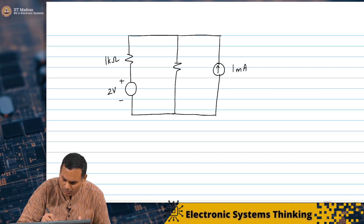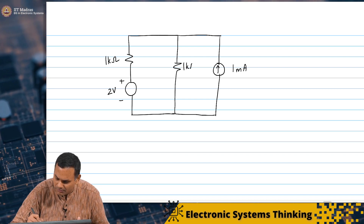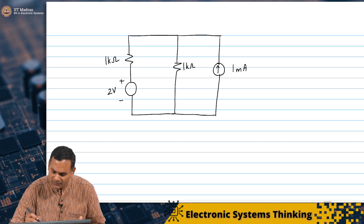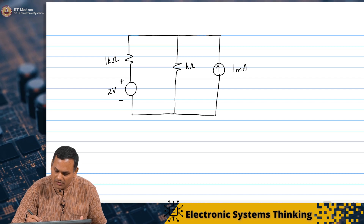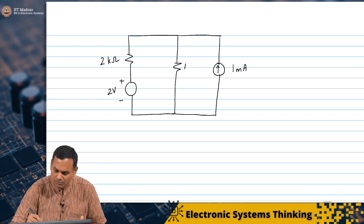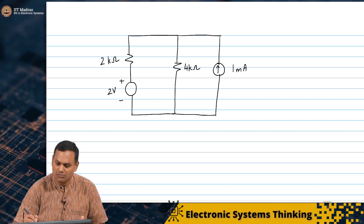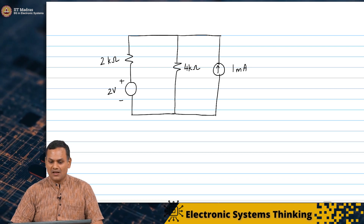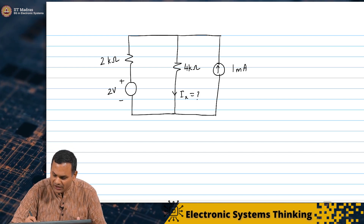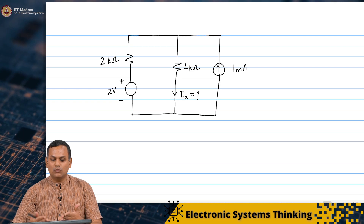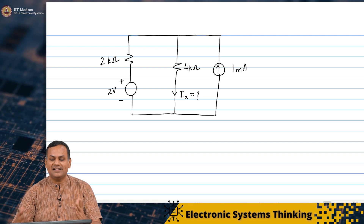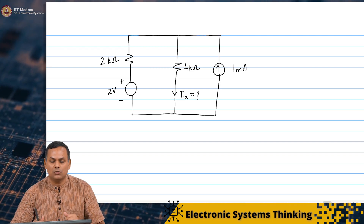I will take simple values to make things easier. Let me make them 2 kilo ohms and 4 kilo ohms. I want to find out the current through the 4 kilo ohm resistor. So this is my question: I have this network — a 2 volt battery, a 2 kilo ohm resistor, a 4 kilo ohm resistor, and a 1 milliamp current source connected in this fashion — and I want to find the current through the 4 kilo ohm resistor.